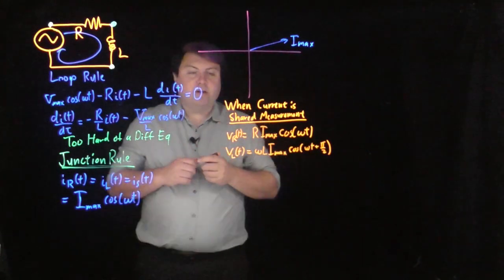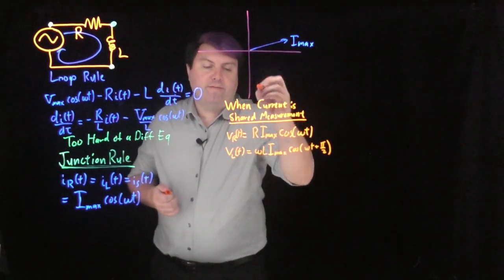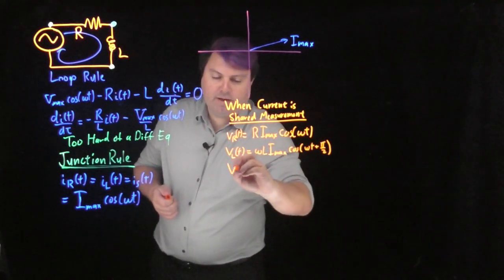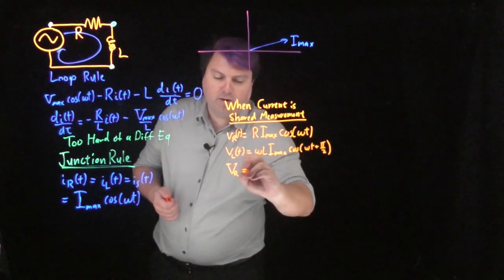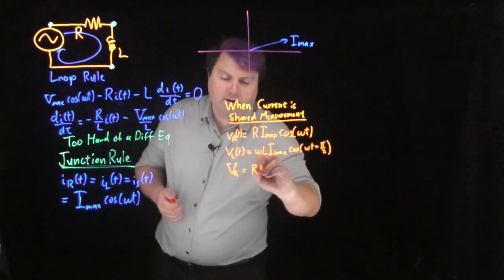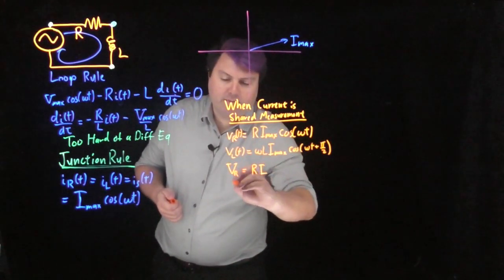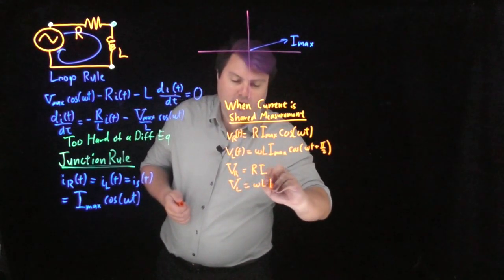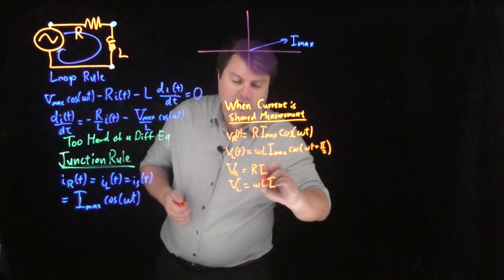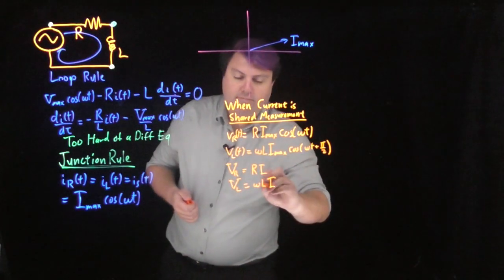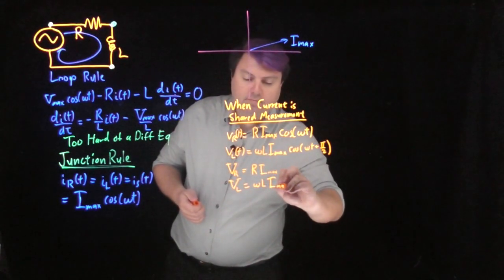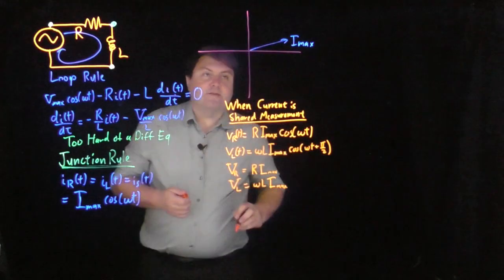When current is the shared measurement, the maximum voltage across the resistor is V_R_max = R·I_max, and the maximum voltage across the inductor is V_L_max = ωL·I_max. These are the maximum values for each element.